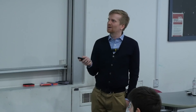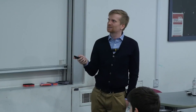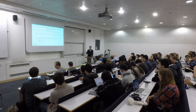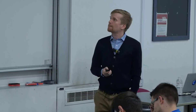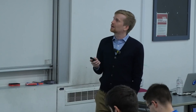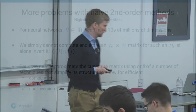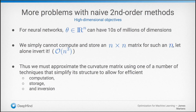We want to approximate the curvature matrix such that we can compute it efficiently, store it efficiently, and invert it efficiently — or resort to approximate inversion. The first major curvature matrix approximation approach is diagonal approximations: take the curvature matrix B (whether the Hessian or the generalized Gauss-Newton) and approximate it with its own diagonal. Storage cost is just O(n) — just store the diagonal entries. Applying the inverse is also very cheap — inverting a diagonal matrix just amounts to inverting each scalar entry, again O(n).